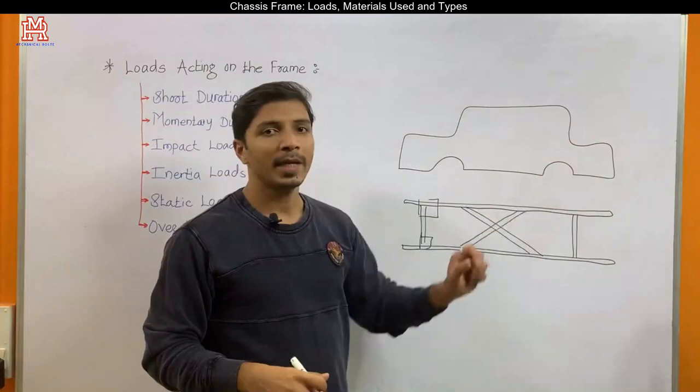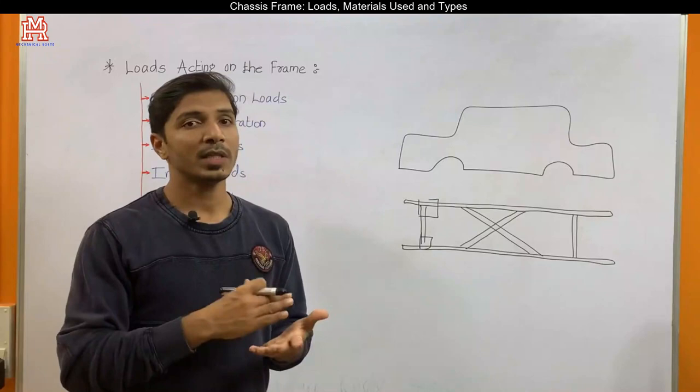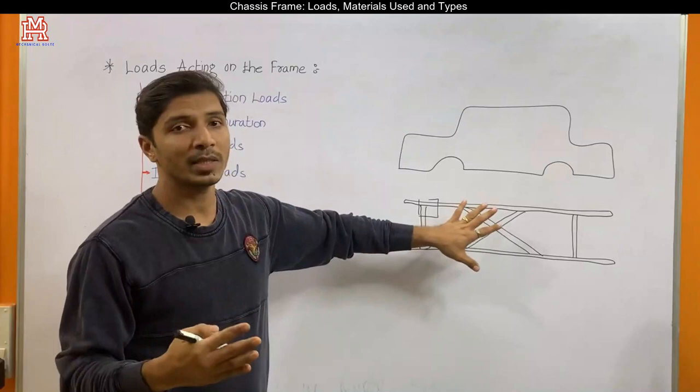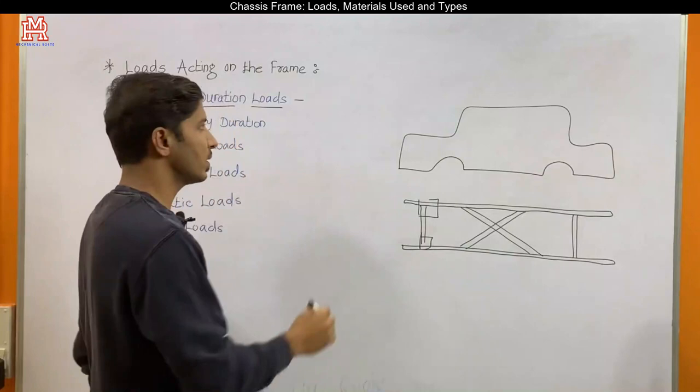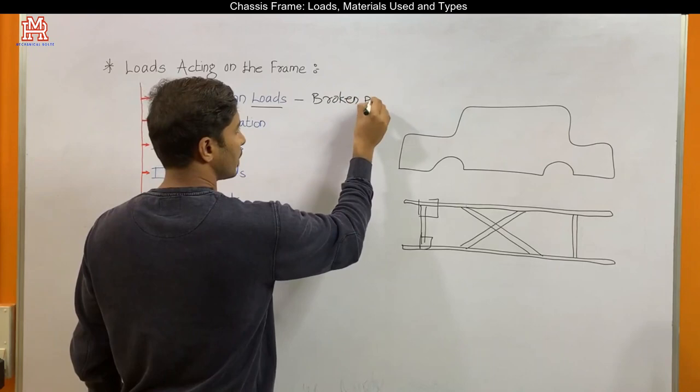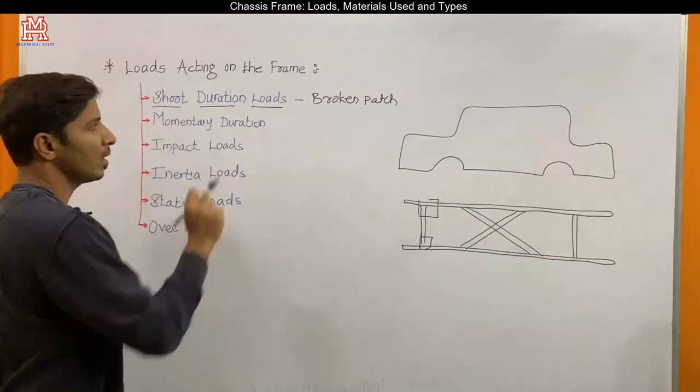We will now discuss different forces or loads acting on the chassis frame. As an engineer, when you design any chassis frame you have to consider all these forces and loads to design a perfect chassis frame. The first load is short duration loads. Whenever the vehicle moves on a rough surface and comes across broken patches, the vehicle experiences reverse reactions — these reactions are short duration loads transferred to the chassis frame, which the frame has to sustain.